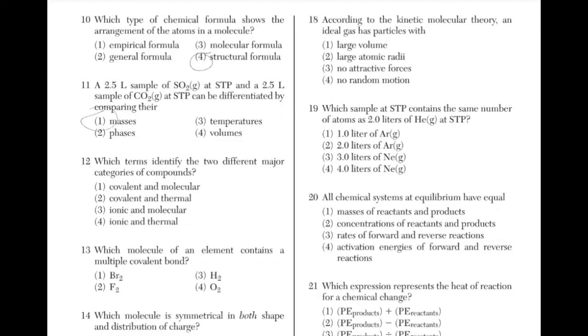Which terms identify the two different major categories of compounds? You just have to remember that the two categories are ionic and molecular. Answer choice 3.